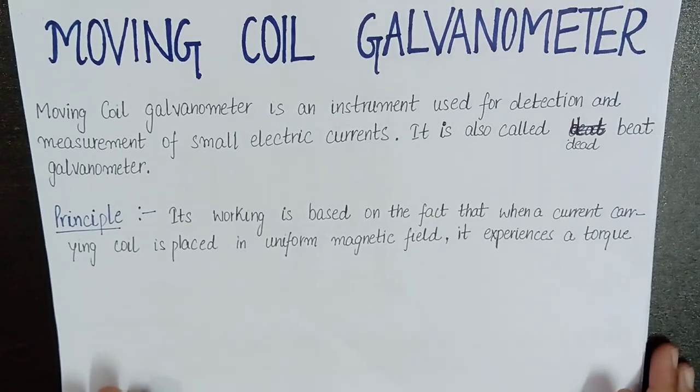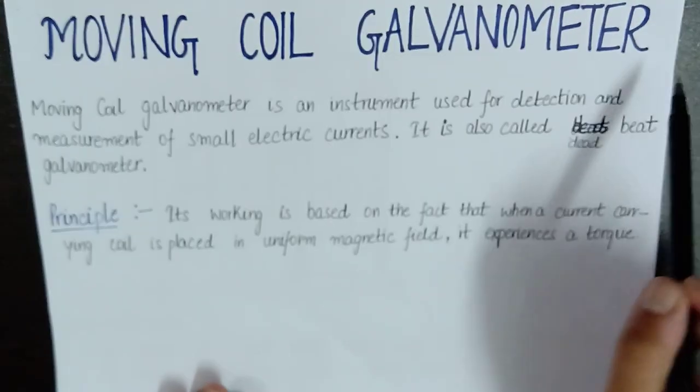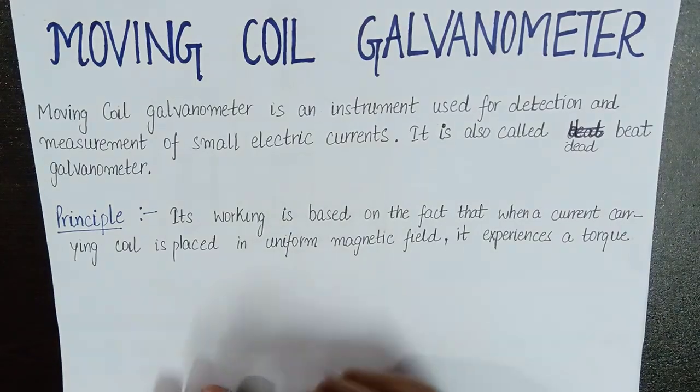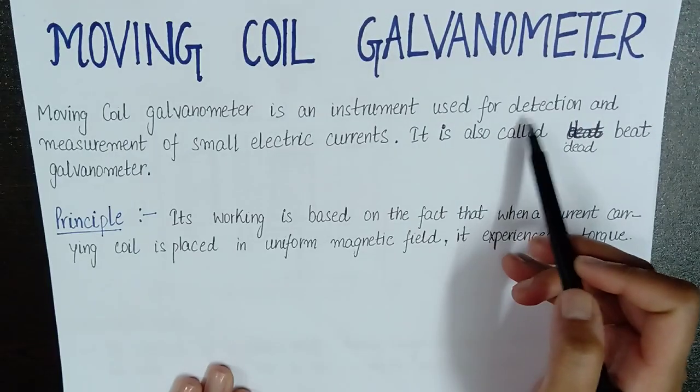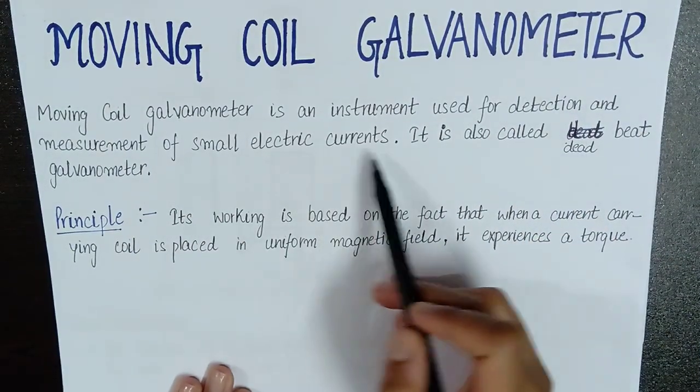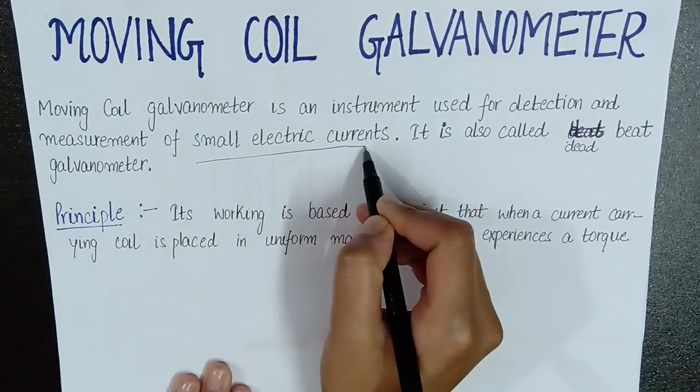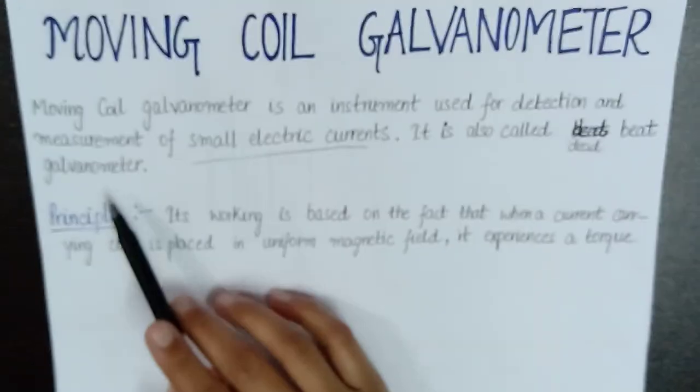Hello students, so our topic is moving coil galvanometer. Moving coil galvanometer is an instrument which is used for detection and measurement of small electric currents. It is also called dead beat galvanometer.